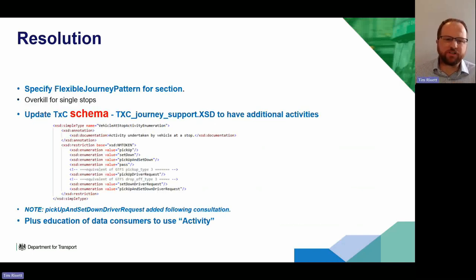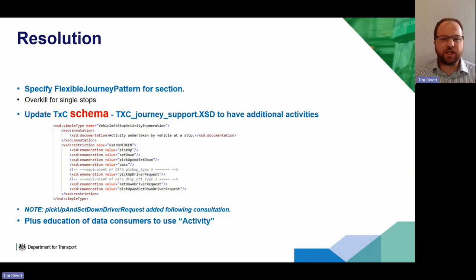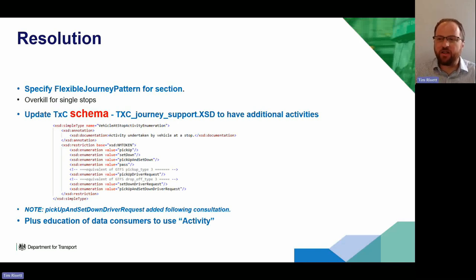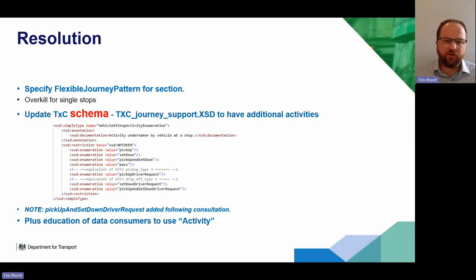What we've done is make an amendment to the TransXChange schema, adding three new types of activity at a stop: pick-up driver request, set-down driver request, and pick-up and set-down driver request. System suppliers will need to amend drop-down boxes and things like that to support it, but for these services — and there's a surprising number of them — it's much easier than treating them as a fully flexible element. So we're amending TransXChange to support that and make it easier for people.